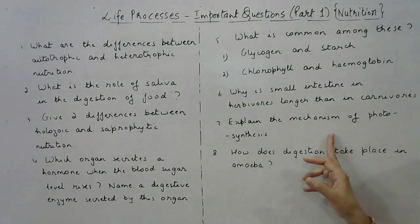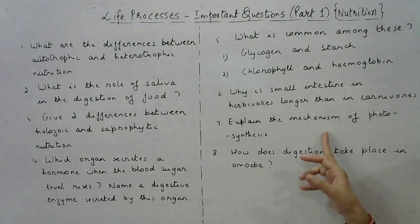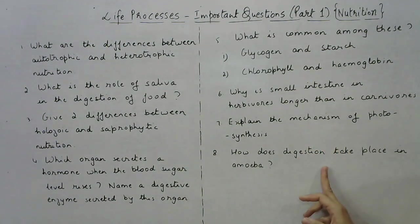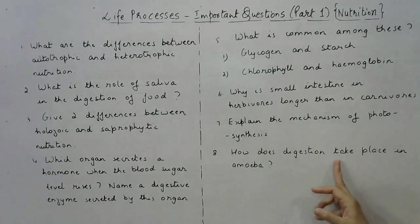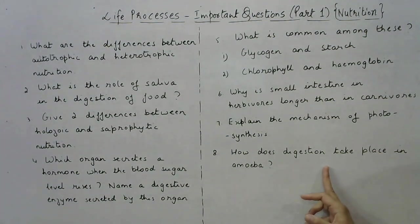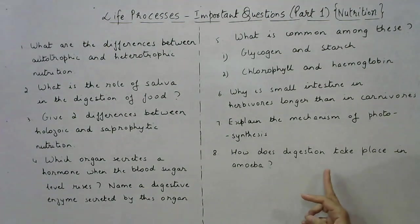The mechanism of photosynthesis was explained in detail in lecture number 1, so you will refer to over there. The eighth question: explain how does digestion take place in amoeba? This was discussed in lecture number 2 along with a diagram and the various steps. For this answer, you will refer to lecture number 2.